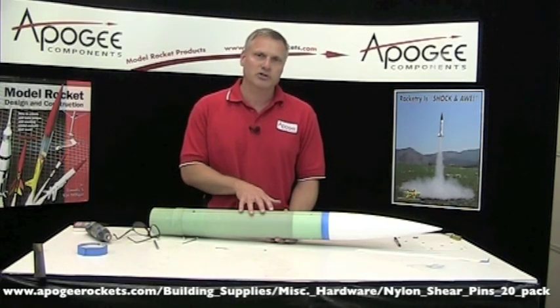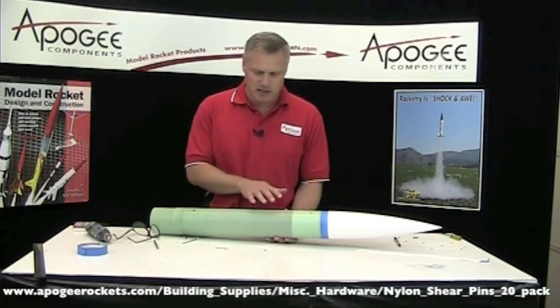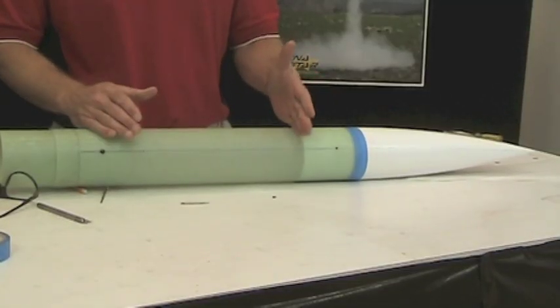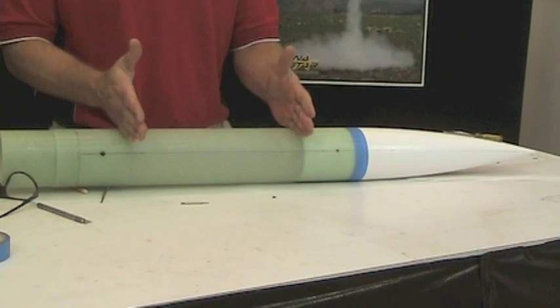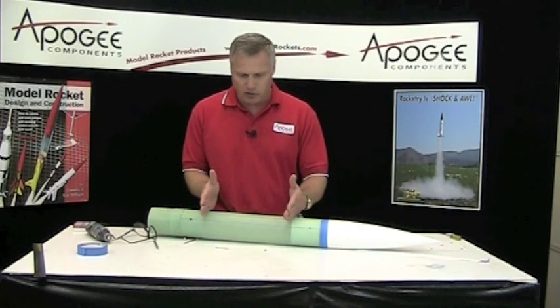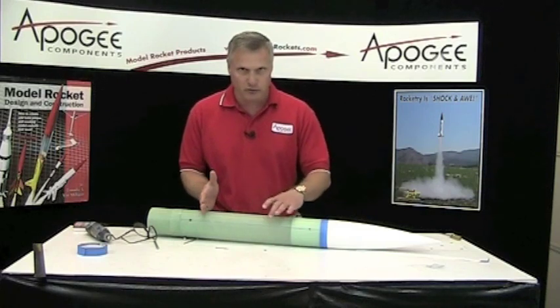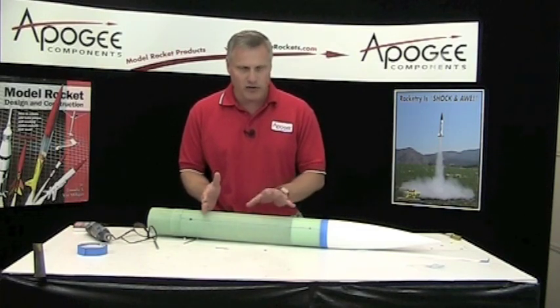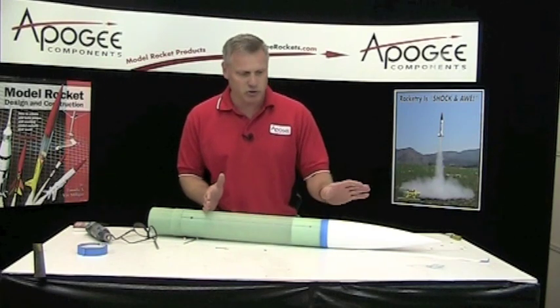So again, check with those ejection charge calculators based on the volume. This is the volume because you can see this is the base of the nose cone and this is the upper end of the E-bay. I've got about 12 and 3/4 inches long and it's 4 inches in diameter. Based on that, that's the amount of black powder I'm going to need to push that off.